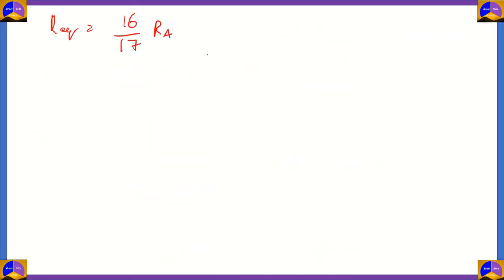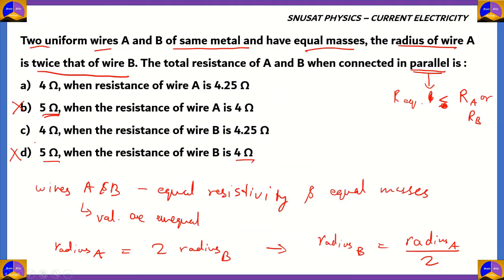Since the relation we have is in terms of RA, option C — 4 ohms when the resistance of wire B is 4.25 ohms — is incorrect, because our total resistance is dependent on A rather than B. Therefore, option A is the only correct option remaining.